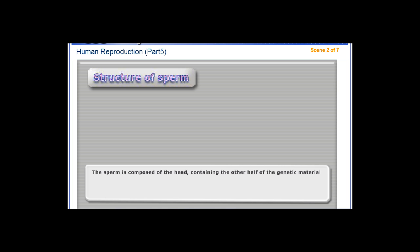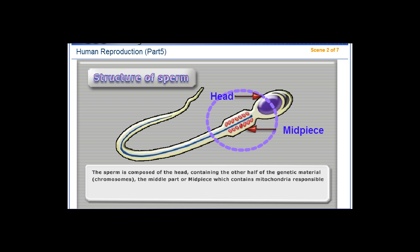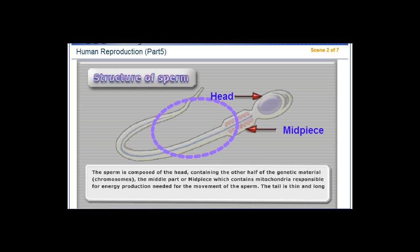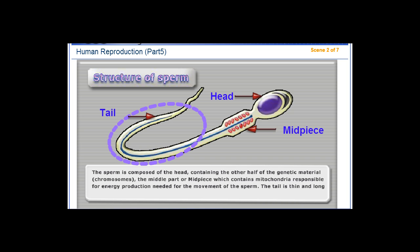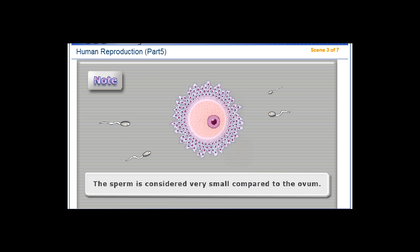The sperm is composed of a head containing one half of the genetic material or chromosomes, a middle part or mid-piece containing mitochondria responsible for energy production needed for the movement of the sperm, and a tail that is thin and long, responsible for swimming and movement of the sperm to reach the ovum. Note that the sperm is considered very small compared to the ovum.